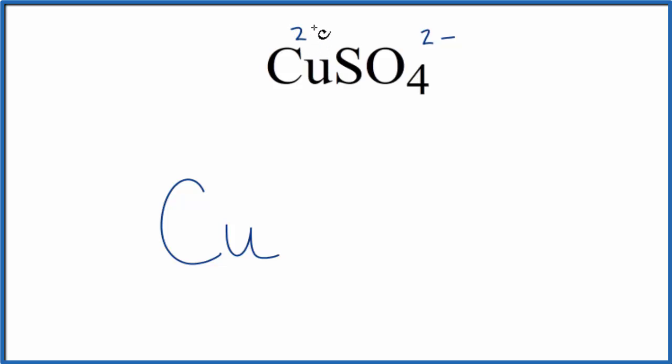We can think about the copper here losing two electrons to become 2+. The sulfate gained those electrons, making it 2-. That's one way to think about it.